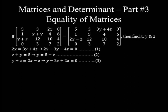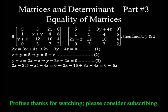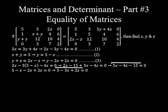Now substitute 5 minus X in place of Y in equations 1 and 3 to reduce the number of variables from 3 to 2. In equation 1: 2X minus 3 times (5 minus X) minus 4Z equals 0, which gives 2X minus 15 plus 3X minus 4Z equals 0, simplifying to 5X minus 4Z minus 15 equals 0. In equation 3: (5 minus X) minus 2X plus 2Z equals 0, which simplifies to 5 minus 3X plus 2Z equals 0. We now have two equations and two unknowns.